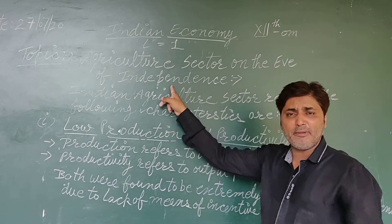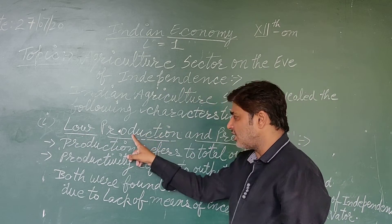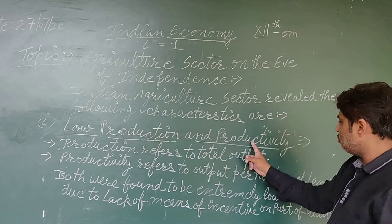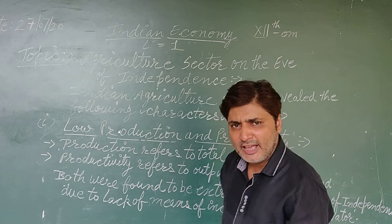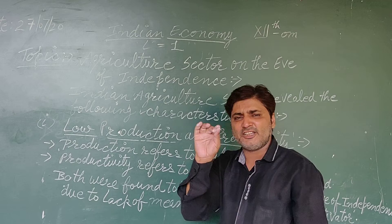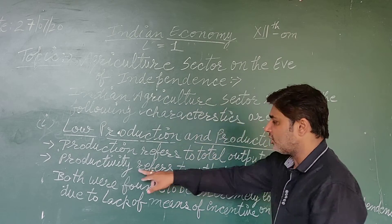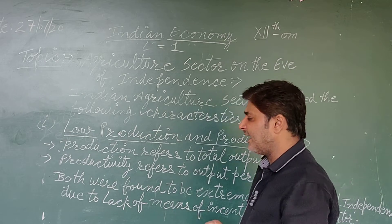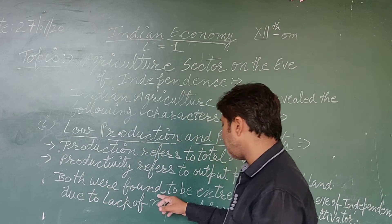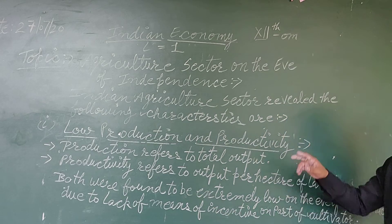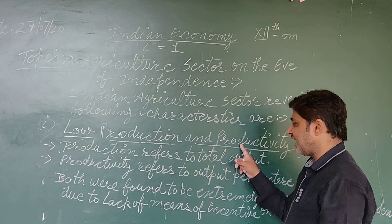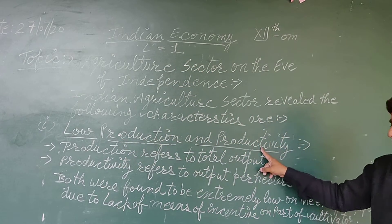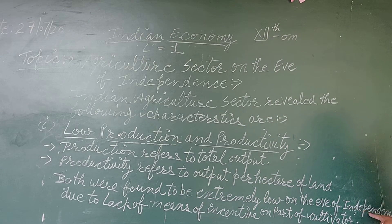On the eve of independence, when we look at the agriculture sector, both production and productivity were found to be extremely low. The total production was low and the per-hectare productivity was also low. Both were found to be extremely low at the time of independence.